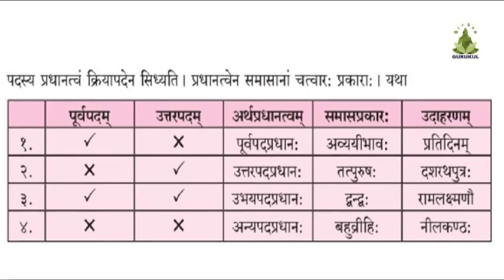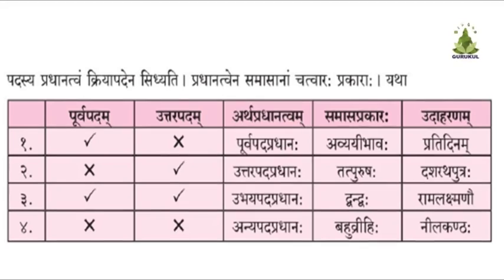The first is Purvapat Pradhanah, the second is Uttar Pat Pradhanah, the third is Ubay Pat Pradhanah, and the fourth is Anya Pat Pradhanah. Purvapat Pradhanah Samasah is Avyaibhava Samasah, Uttar Pat Pradhanah is Tath Purushaha Samasah, Ubay Pat Pradhanah is Dvandva Samasah, and Anya Pat Pradhanah is Bahuvrihi Samasah. In this video, we will see Tath Purushaha Samasah.